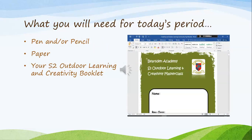What will you need for today's period? You're going to need a standard pen or pencil and paper — preferably blank paper if you have it — and your S2 Outdoor Learning and Creativity booklet, which should be online or if you've got a hard copy. That's what it looks like to help you complete today's tasks.